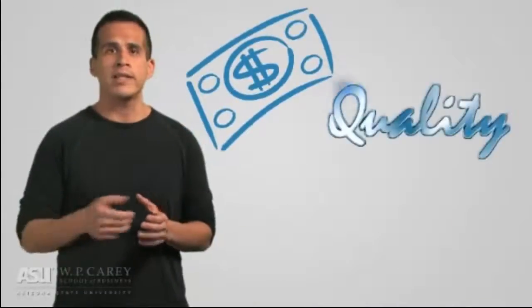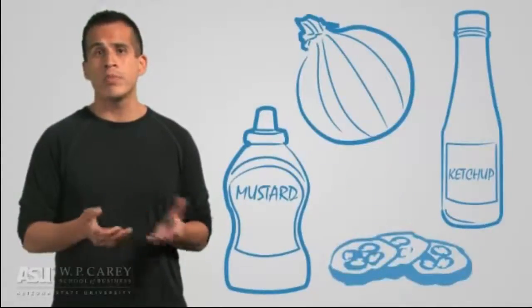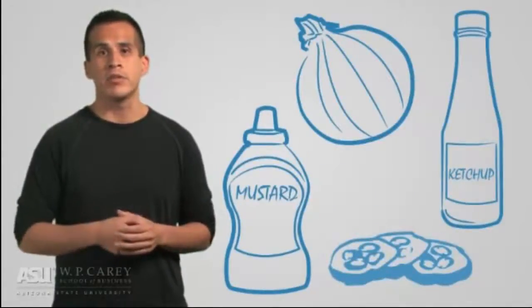In running these manufacturing facilities, executives must consider trade-offs related to cost, quality, speed, and flexibility. Higher quality burgers take more time to manufacture and ingredients are more expensive. Offering the customer more options could be more costly and time consuming to produce.